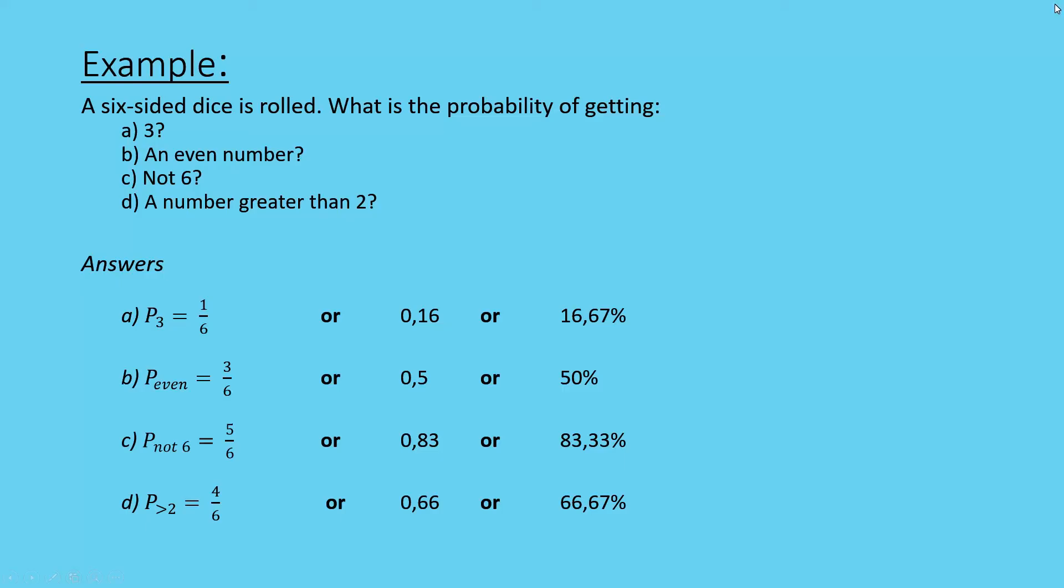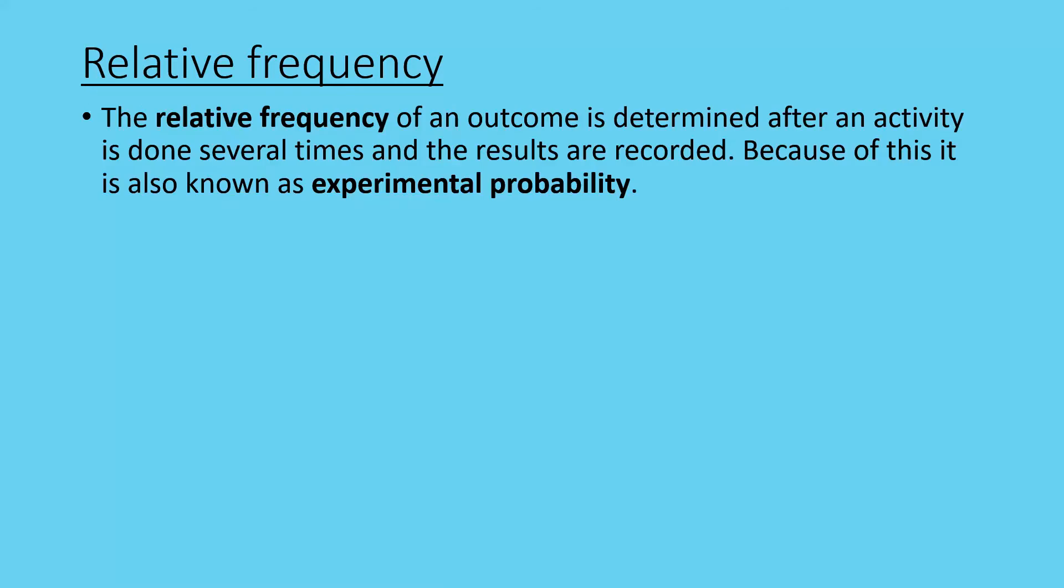So now we're going to move on to relative frequency. So relative frequency is looking at the outcomes that are determined from a result. You do an experiment multiple times over. And because of this, it's known as experimental probability.